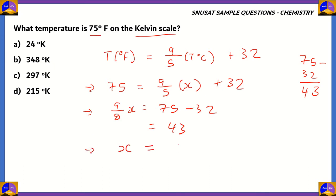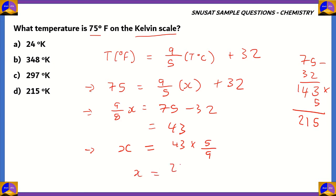Therefore x = 43 × (5/9), because the fraction 9/5 was multiplied to x, and when taken to the right-hand side it becomes divided — the reciprocal. So x = 215/9. Let's divide: 215 ÷ 9. 9 × 2 = 18; 21 − 18 = 3; bring down 5 to get 35. 9 × 3 = 27; 35 − 27 = 8. So x = 215/9.